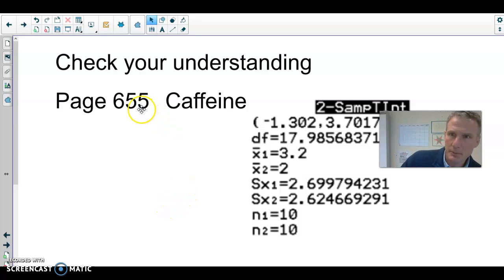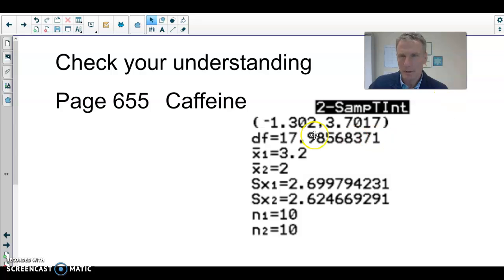Hey, there is a check your understanding problem on page 655. I will use it as an example here. We're talking about caffeine usage here, and Mr. Wilcox has 20 students in his statistics class. He randomly assigns them to treatment groups, and they all get a 12-ounce cola.